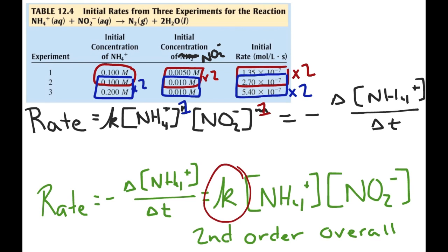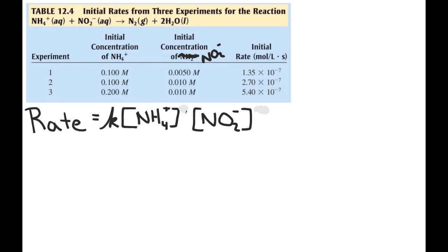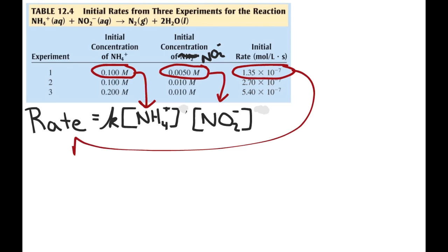Now we should ask ourselves: with this data, what's the value of K? We've got three experiments with three initial concentrations of reactants and three rates — we just substitute in everything we know and solve for K. For experiment one, the initial concentration of ammonium is 0.100 molar and the initial concentration of nitrite is 0.0050 molar. These can be substituted in and set equal to the rate of that reaction, which was measured as 1.35 times 10 to the negative 7th moles per liter per second.